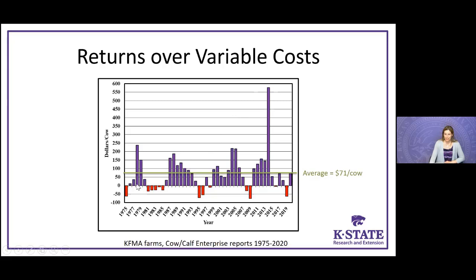What you typically see is the cattle cycle. We have some good returns, the herd expands, we have a lot of cows and calves, and all of a sudden we have a lot of supply and prices go down. Then we have contraction in the herd — less profitability, we start selling cows, and we have less inventory. Then the cycle starts over as prices come up and we add more cows. On average across our KFMA farms in Kansas, it's about $71 over variable costs per cow.